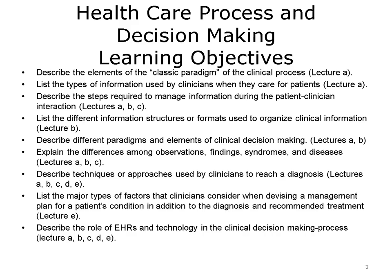The objectives for health care processes and decision making are to describe the elements of the classic paradigm of the clinical process, list the types of information used by clinicians when they care for patients, describe the steps required to manage information during the patient-clinician interaction, list the different information structures or formats used to organize clinical information, describe different paradigms and elements of clinical decision making, explain the differences among observations, findings, syndromes, and diseases, describe techniques or approaches used by clinicians to reach a diagnosis, list the major types of factors that clinicians consider when devising a management plan for a patient's condition in addition to the diagnosis and recommended treatment, and finally, describe the role of EHRs and technology in the clinical decision making process.